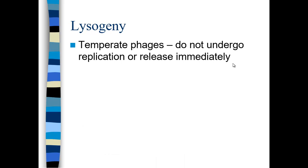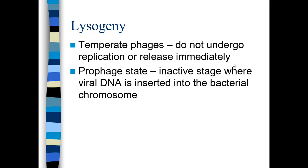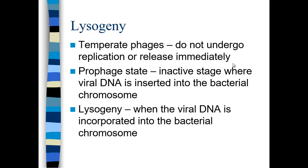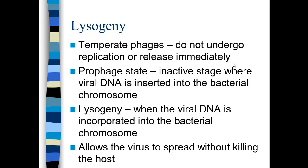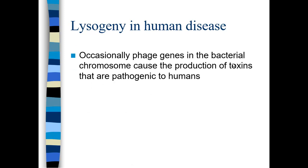When a cell is lysogenic, the phage doesn't readily undergo replication or release immediately — these are more temperate phages that take longer to divide. When phage DNA is inserted directly into the bacterial chromosome, we call that a prophage, and this state we call lysogeny. This allows the virus to spread every time the bacteria divides and replicates its chromosome. The host cell is not killed — it just has new DNA incorporated into its chromosome.